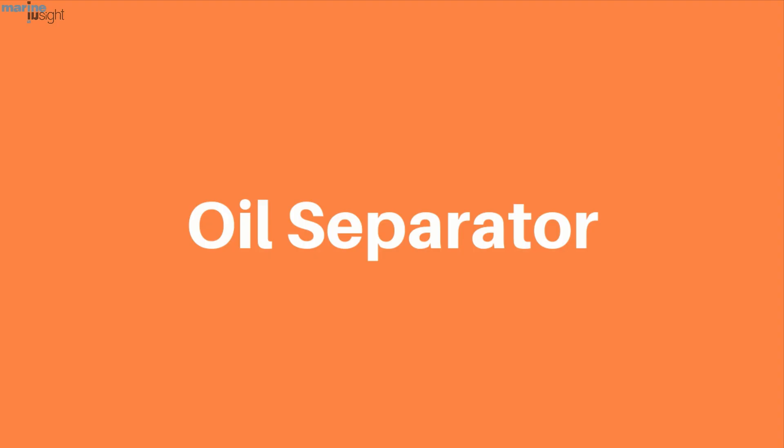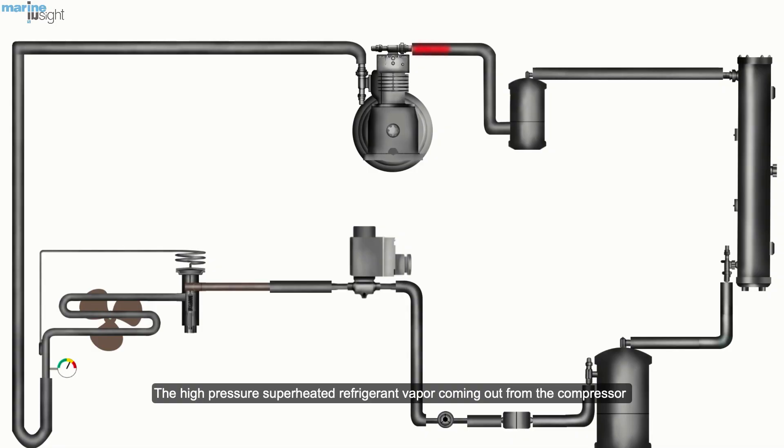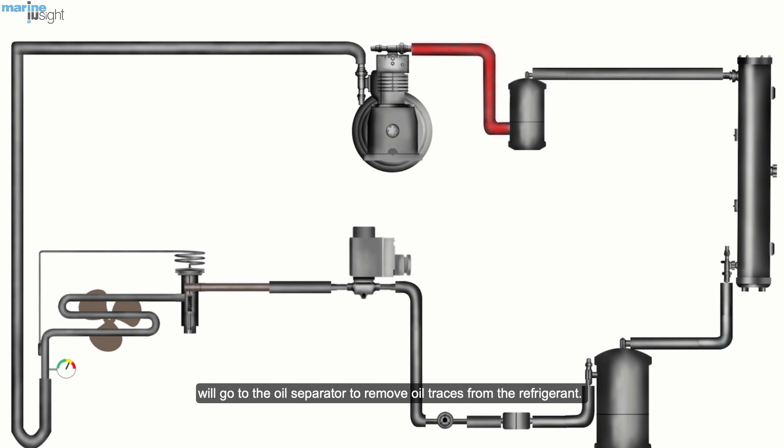Oil Separator. The high pressure superheated refrigerant vapor coming out of the compressor will go to the oil separator to remove oil traces from the refrigerant. An oil separator ensures oil return to the compressor oil sump.